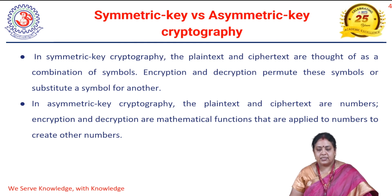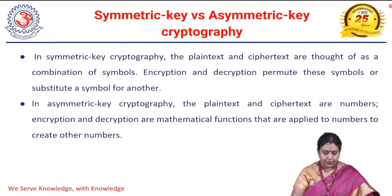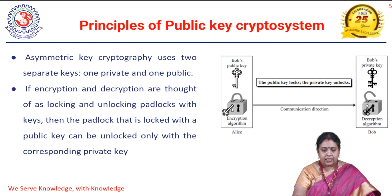In asymmetric cryptography, the plain text is treated as numbers, and upon these numbers we apply the mathematical functions so that the numbers are converted and transformed into other numbers — that is nothing but the cipher text.